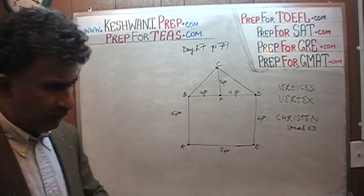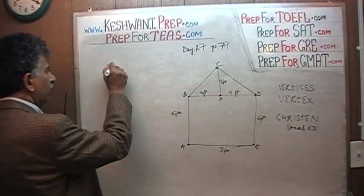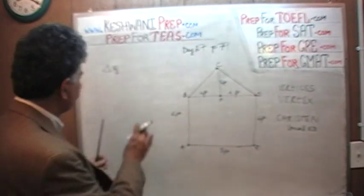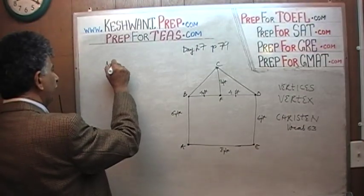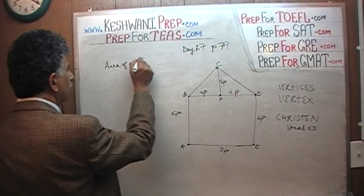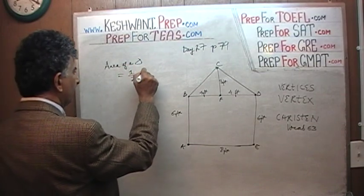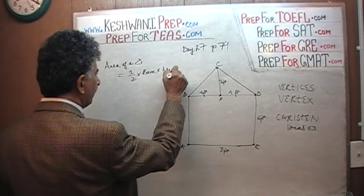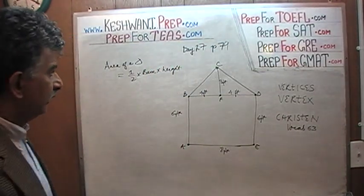They are looking for the area of the shape. So let's find out. The area of a triangle — we know — equals one-half base times height. One-half base times height is the area of the triangle.